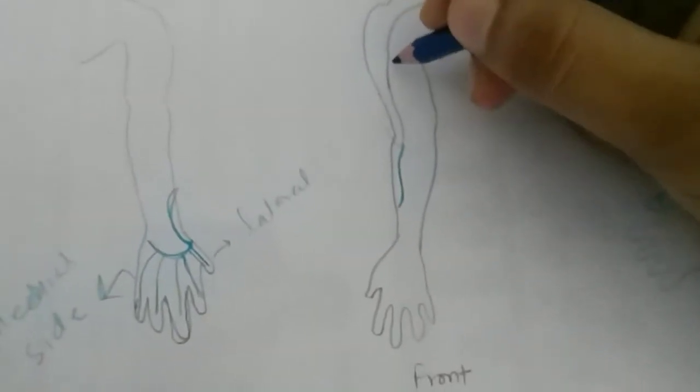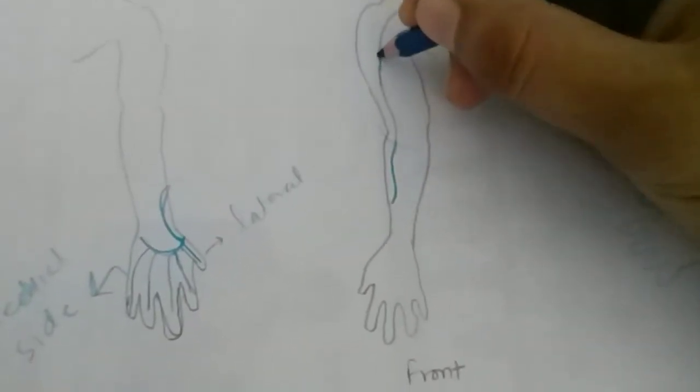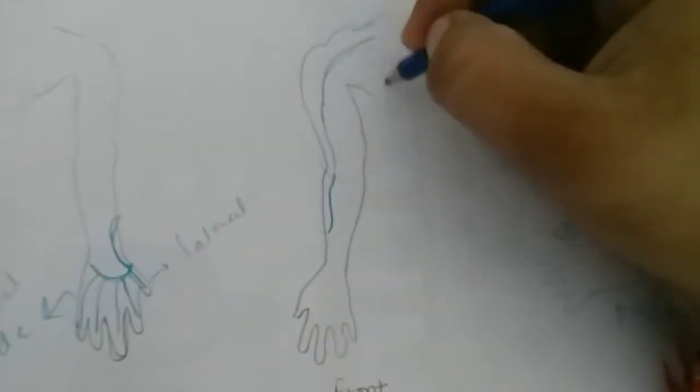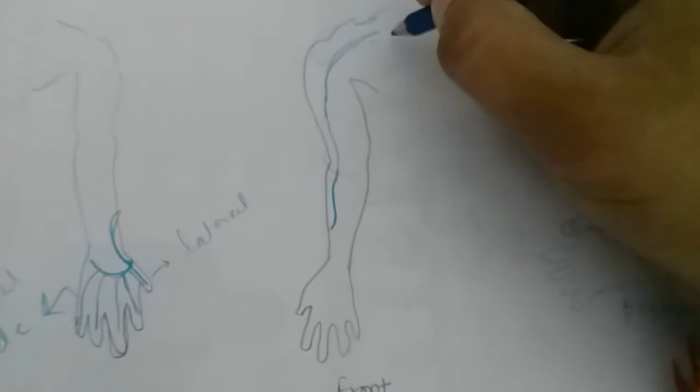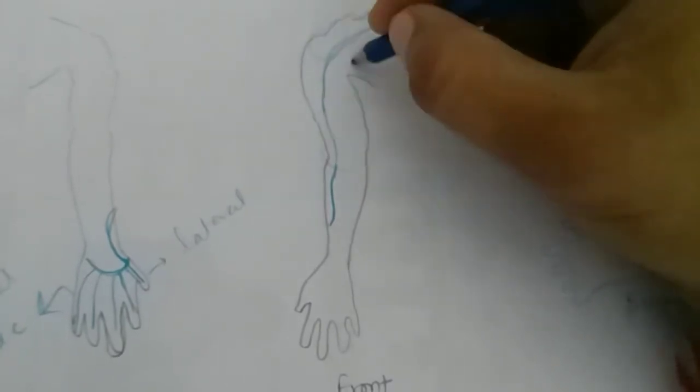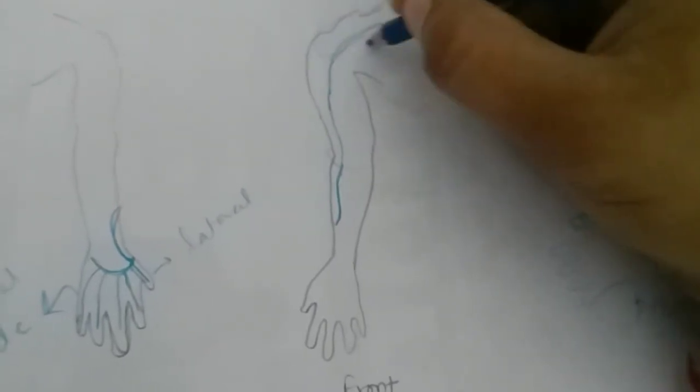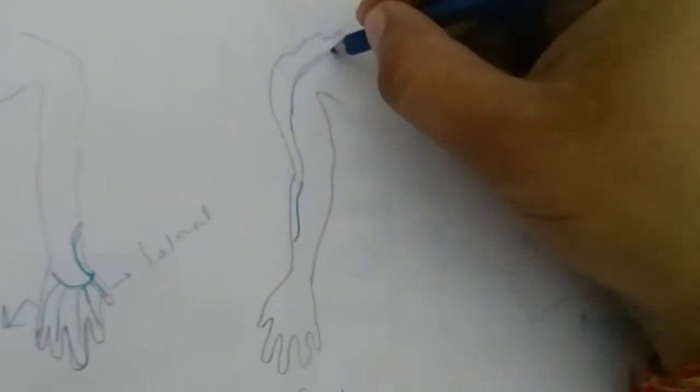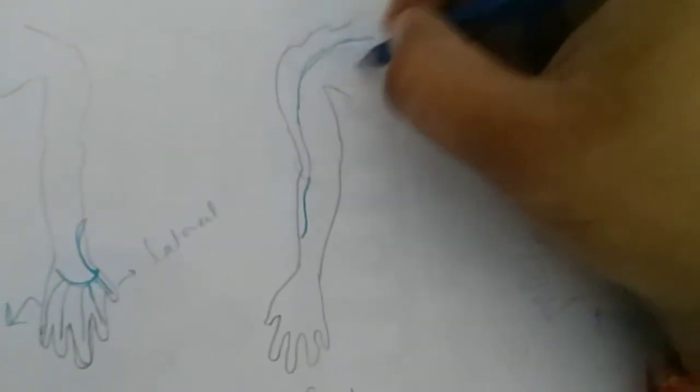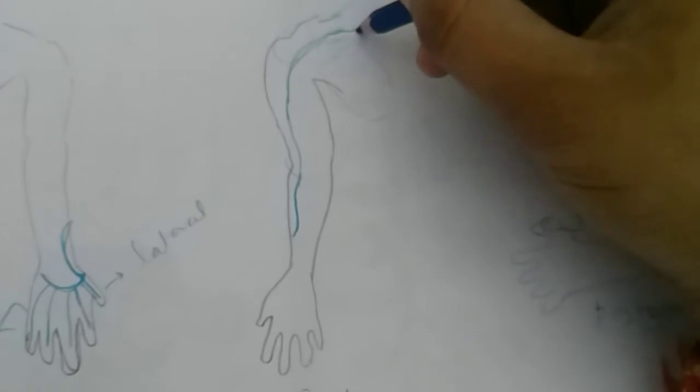This is your shoulder region. Here is the deltoid muscle and here is the pectoralis major, so you have the deltopectoral groove. The cephalic vein will pass through the deltopectoral groove.